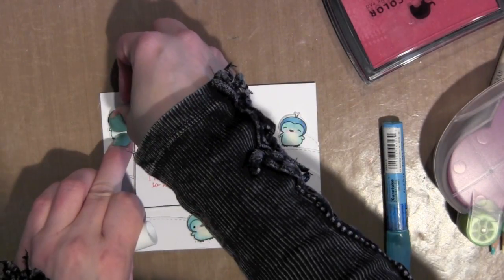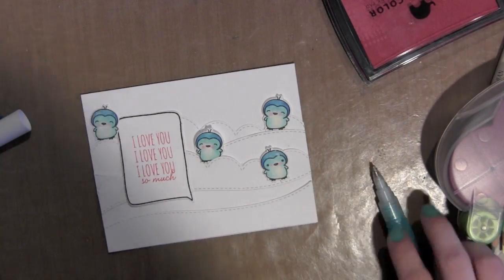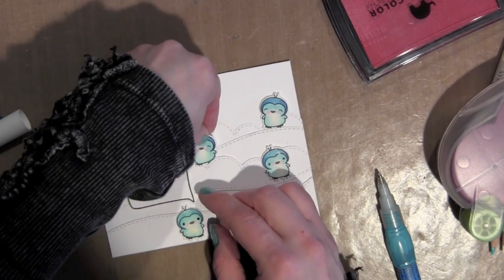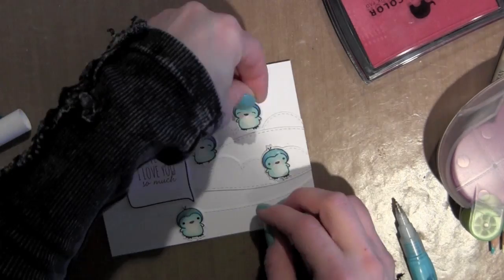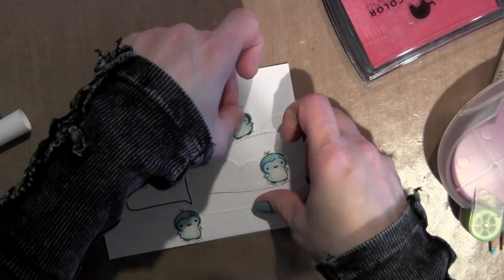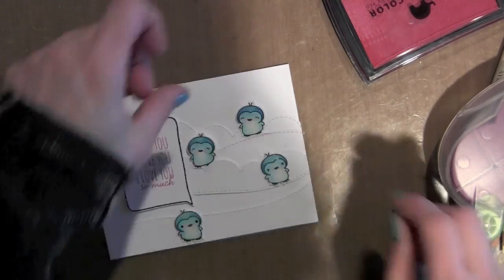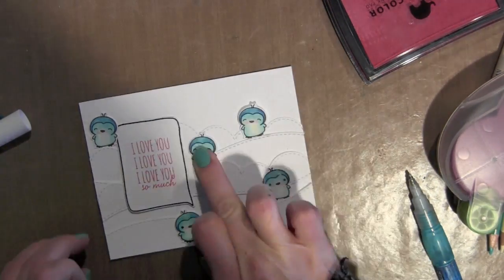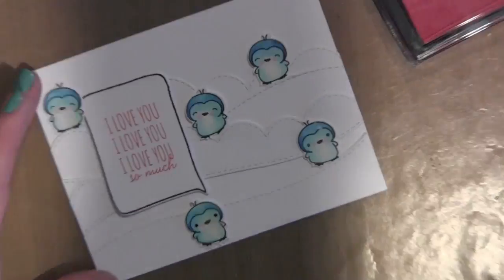I'm using a Zig glue pen to just add a little bit of glue to all of these. They're pretty small, and that makes it easy to add a little liquid adhesive and then pop them right onto my card.